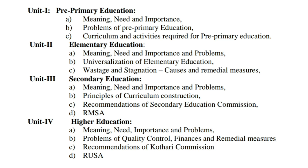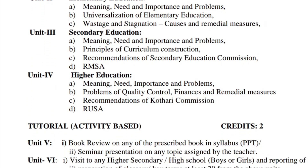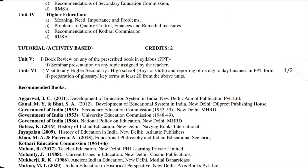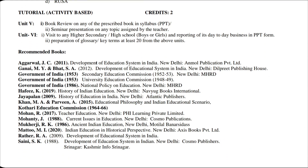Unit 4 is Higher Education. In this unit you have to study: meaning, Need and Importance of higher education, and problems related to higher education; B. Problems of quality control, finances, and remedial measures; C. Recommendations of Kothari Commission regarding higher education; D. RUSA (Rashtriya Uchchatar Shiksha Abhiyan). Tutorial is activity-based, 2 credits. Recommended book: Development of Education System in India by J.C. Agarwal, published by Vikas Publications Private Limited.